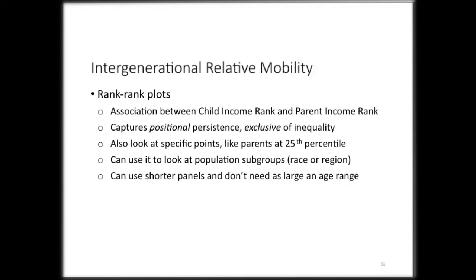Another way of getting at intergenerational relative mobility is to look at ranks rather than income or log income. That really hones in on positional differences rather than income gaps per se. You can think of this as a measure that's exclusive of inequality — it doesn't matter how big income gaps are growing; this is just about where you are in the income distribution regardless of the distance between different percentiles. A nice feature is that using the national income distribution as a benchmark allows you to compare population subgroups like race or region. Catherine showed you a map based on the Chetty-Hendren work showing rank-based differences across the country with the Southeast at low mobility.